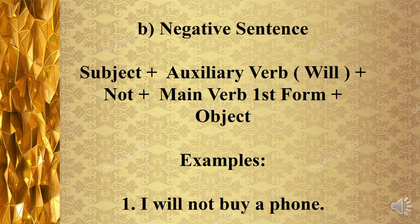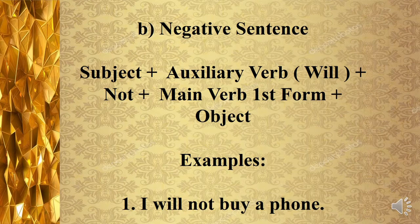Let's discuss the negative construction of future indefinite tense. Jab bhi fail mustakbil mutlik ke manfi jumlai banaayenge, toh is structure ko madde nazar rakhenge: first subject, then auxiliary verb will, then not, then verb ki pehli form, and finally object. For example: I will not buy a phone — yehni main phone nahi khareedoonga.